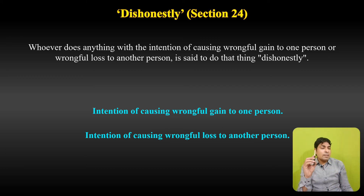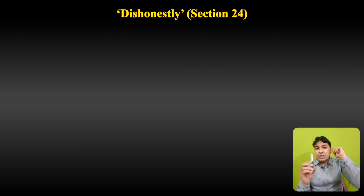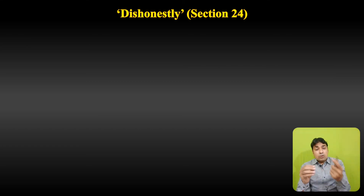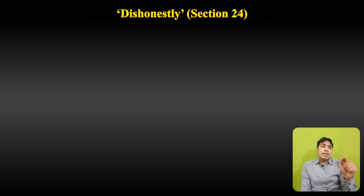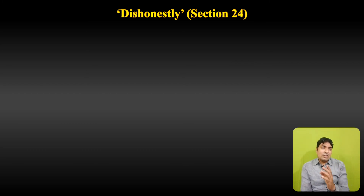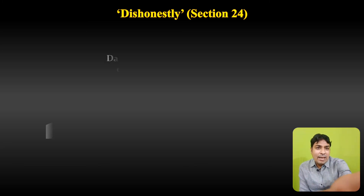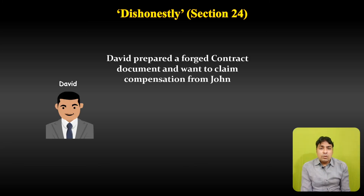So these are the two essential parts of 'dishonestly': first, the person receiving the property gets a wrongful gain, and second, the person from whom it is received suffers a wrongful loss. If both these elements are present, then definitely that transaction is caused by dishonest intention — it is called 'dishonestly' under Section 24.